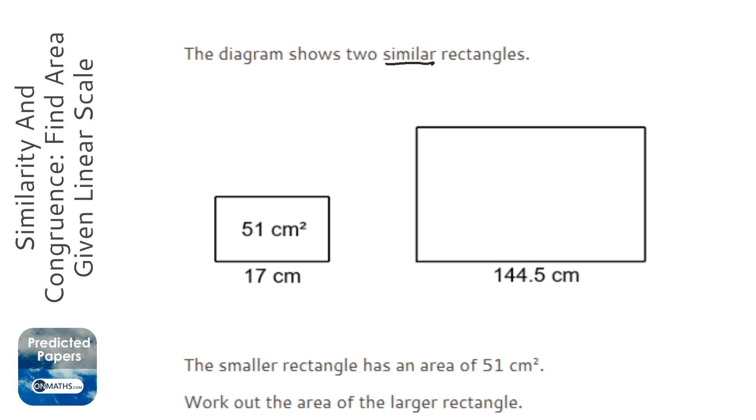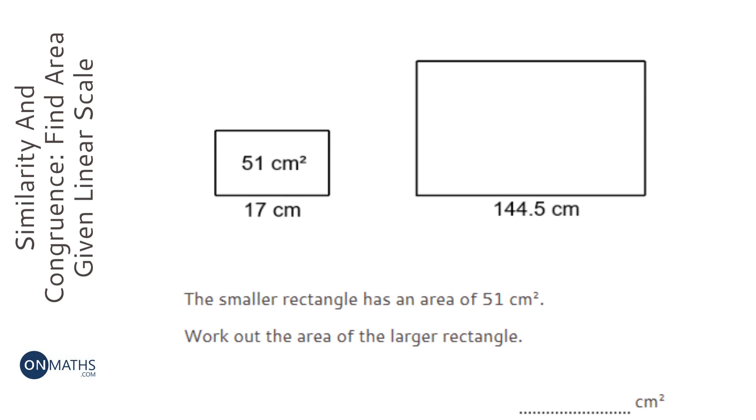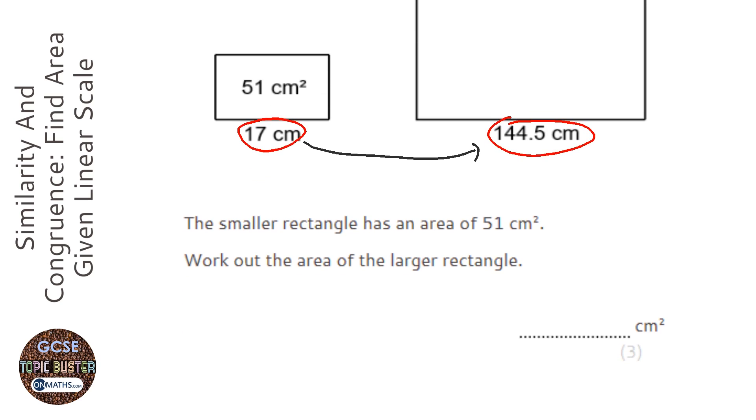Okay, so we're told we have two similar triangles. Now similar means that one's an enlargement of the other, so everything grows in proportion. We have two lengths - we've got this length and this length - so we can work out a scale factor, like what we times that by to get to that.